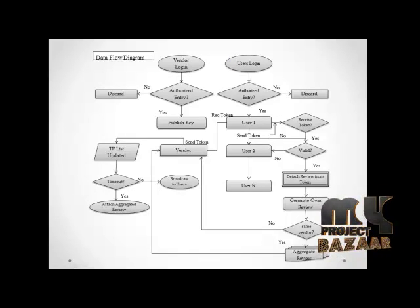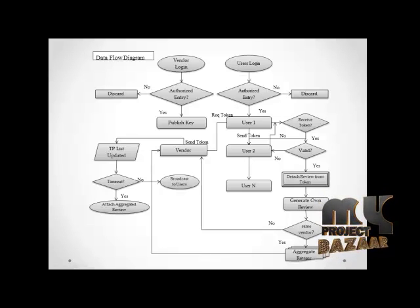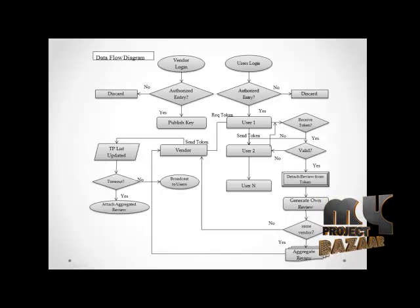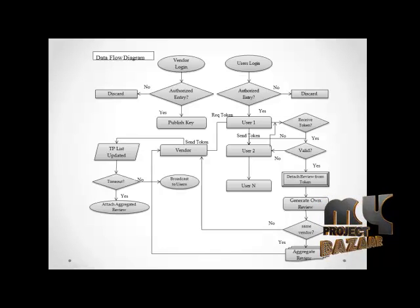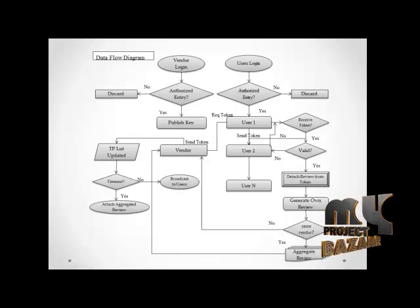This is the data flow diagram of this project. Here, I have considered a service vendor and service user. These two persons can login using their valid username and password which can be generated during the registration, so other unauthorized persons will be discarded from entry.